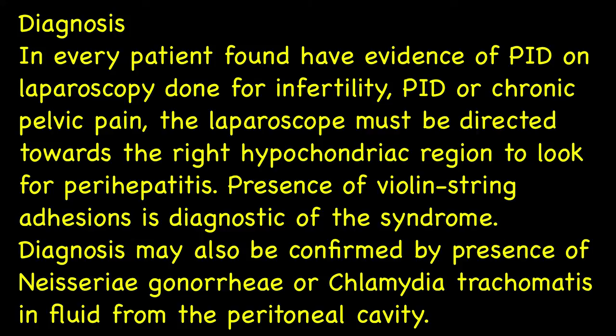In every patient found to have evidence of pelvic inflammatory disease on laparoscopy done for infertility, pelvic inflammatory disease, or chronic pelvic pain, the laparoscope must be directed towards the right hypochondriac region to look for perihepatitis. Presence of violin string adhesions is diagnostic of the syndrome.